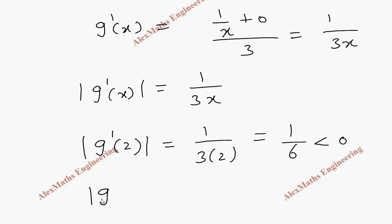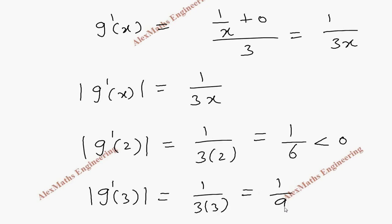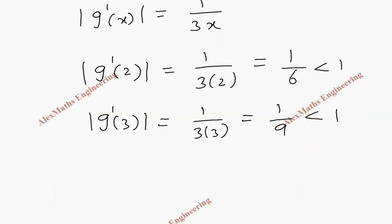When x is 3, g dash of 3 is 1 divided by 3 into 3, which is 1 by 9. We check whether it is less than 1 — yes, even 1/6 and 1/9 are both less than 1. So we can say this method can be applied.